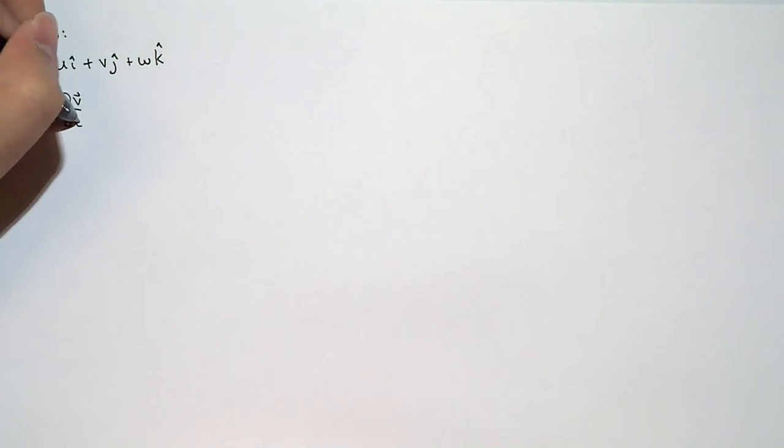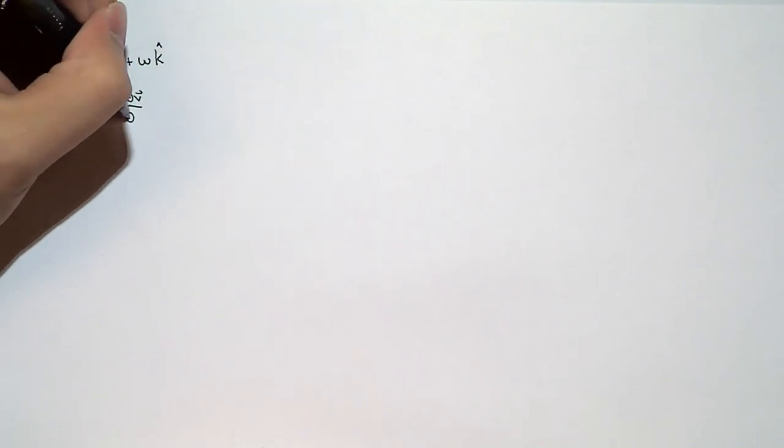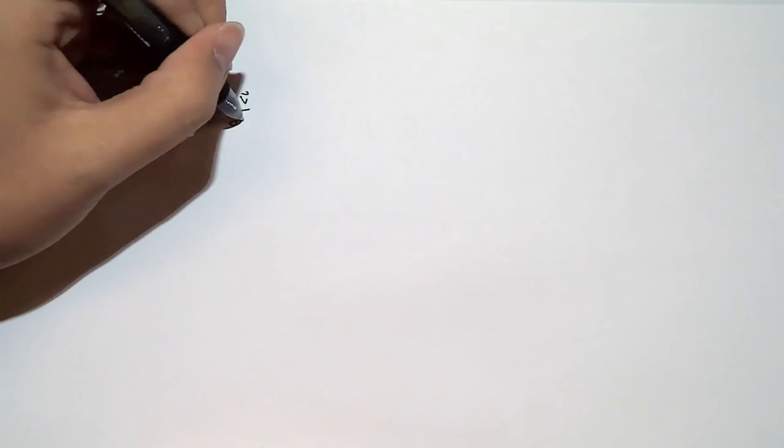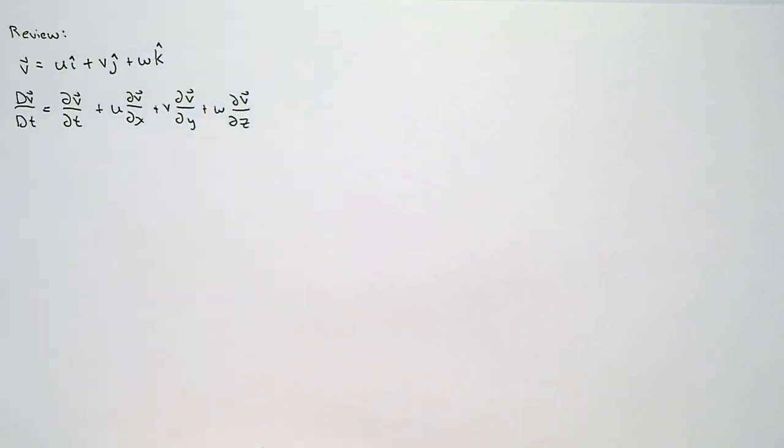So this acceleration vector looked something like this, where you had your temporal or local change, and then you had your spatial or convective change. This is in Cartesian coordinates. This is a bit of a review.